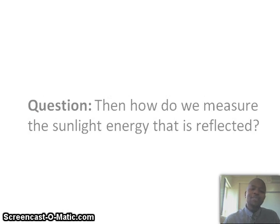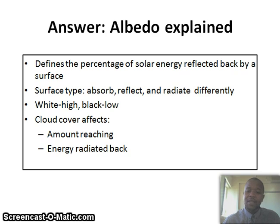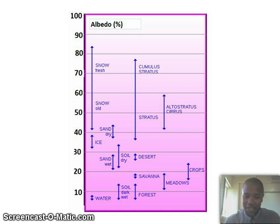Albedo defines the percentage of solar energy reflected back by a surface. The type of surface determines how energy is absorbed, reflected, and radiated. Objects that tend to be white have a high albedo, and those that are black have a low albedo. Cloud cover also affects the amount of energy actually reaching the object and the energy radiated back. For example, at two ends of the spectrum, snow reflects 70% of the energy received, while dark soil reflects only 10% — and we all know that dark soil is a darker shade than snow.